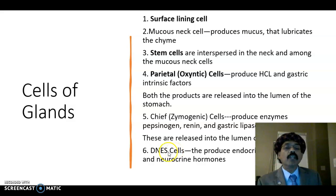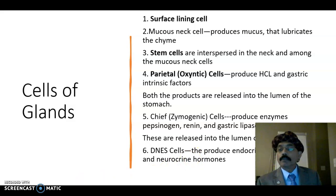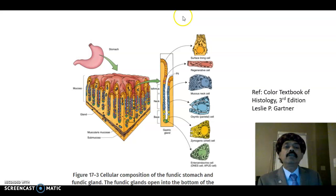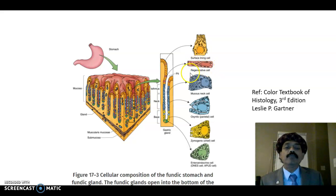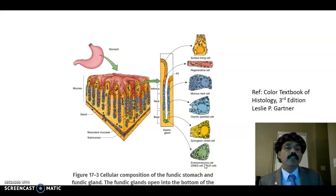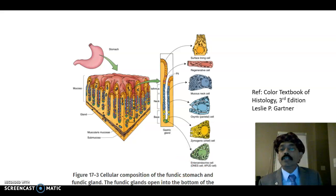APUD stands for amine precursor uptake decarboxylase. These cells are also called argentaffin cells depending on their staining character. The DNES cells produce endocrine, paracrine, or neurocrine hormones such as histamine, heparin, and local hormones like cholecystokinin or gastrin. Usually one type of cell produces one type of substance.